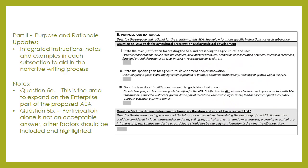Continuing into Part 2, Section 5, Purpose and Rationale, we have integrated the instructions, notes, and examples into each of the sub-questions to aid in the narrative writing process. The AEA goals for agricultural preservation and development should be clearly stated in this section. You will need to provide a detailed justification for creating your AEA with well thought out goals for economic development and a plan to achieve those goals.